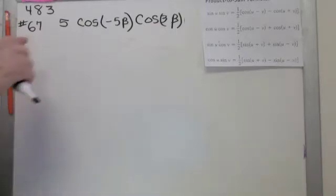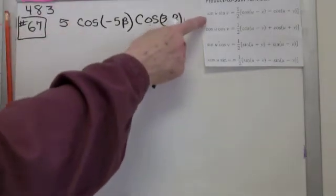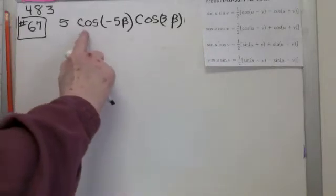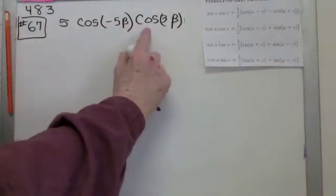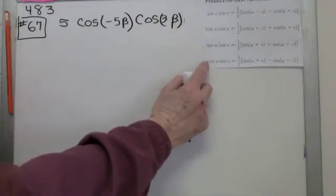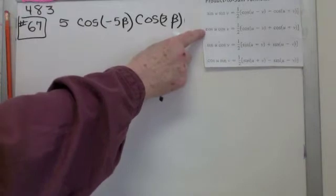The first thing to do, looking at the problem, is to try and identify which one of these product-to-sum formulas it matches. One clue is this cosine and cosine. Sine, sine, cosine, cosine, sine, cosine, cosine, sine. So hopefully you recognize that it's the second one here.